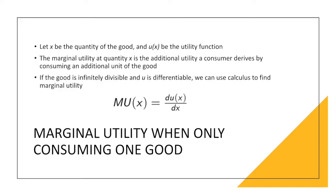We'll touch briefly on marginal utility, which is the partial derivative of one good while treating the other as a constant. Here we have the marginal utility of good X as the partial derivative of the utility function with respect to good X. Once you have taken this, you can graph it for a single good to demonstrate diminishing marginal utility. If preferences are strongly monotonic, marginal utility is going to be strictly positive. The marginal utility at quantity X is the additional utility a consumer derives by consuming an additional unit of that good. If the good is infinitely divisible and utility is differentiable, we use calculus to find marginal utility — vital for calculating the marginal rate of substitution needed for midterm optimization problems.